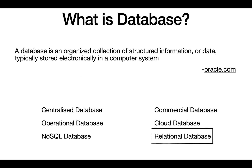A database is an organized collection of structured information or data, typically stored electronically in a computer system. In layman's terms, you can think of a database as a system where we store all the data. Until this point we were using JSON and shapefiles. If you look at JSON or shapefiles in QGIS or ArcMap, it is nothing but a collection of different rows representing each feature — and we can save all that data in a database so that we can access it from there.